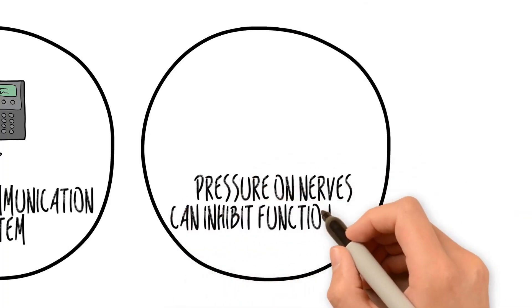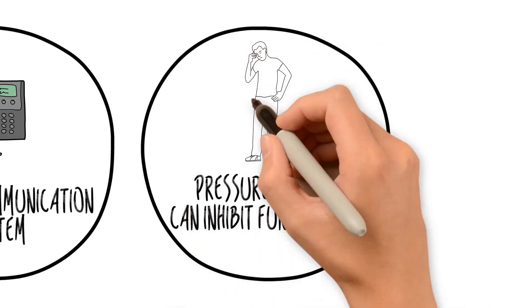If there's any pressure on the nerves, it can inhibit their functionality, which can result in problems within the body.